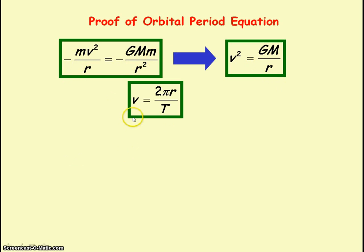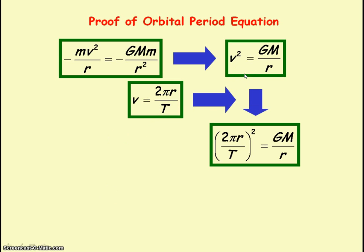The average speed of the planet orbiting the sun is given by this equation. The average speed is the distance travelled divided by the time taken. So the distance travelled for one complete orbit is the circumference of the orbit, so that's 2πr, and that's divided by the time taken, which is the time period. If we substitute this equation for v into here, we get this.